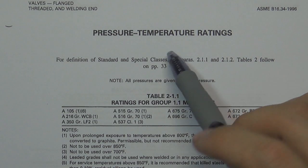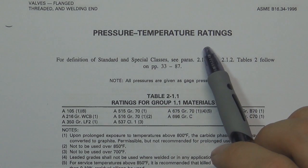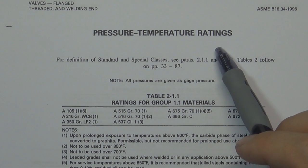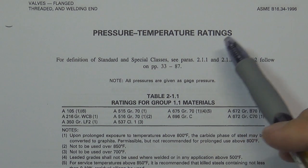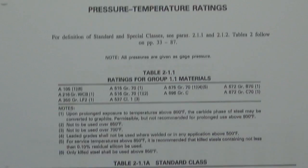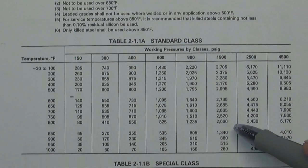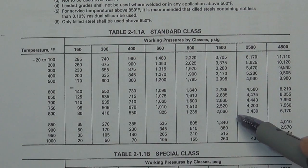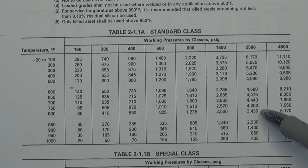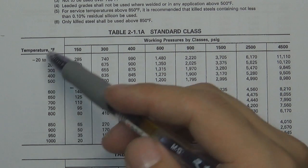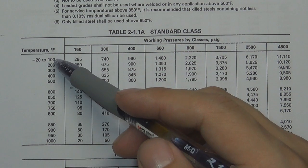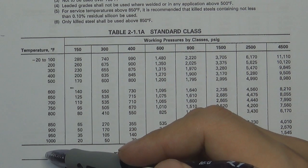This is a real pressure-temperature reading table from ASME B16.34. In this table, you can find the real pressure that the valve can hold in different temperature ranges.